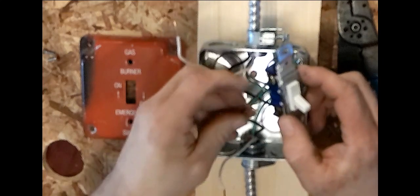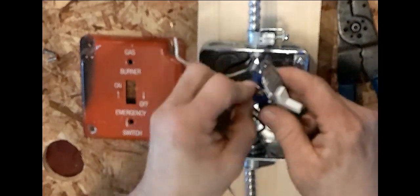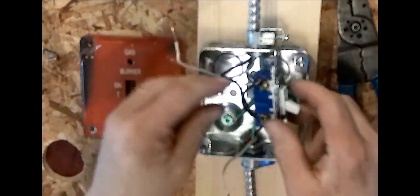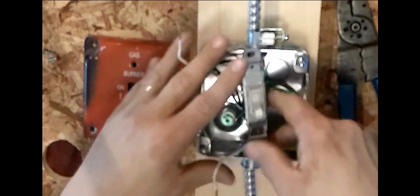Now we're going to take our load wire and connect that to the terminal of our on position. So there we have it. We have our line and our load wired into our switch and now we can set our switch in its position.